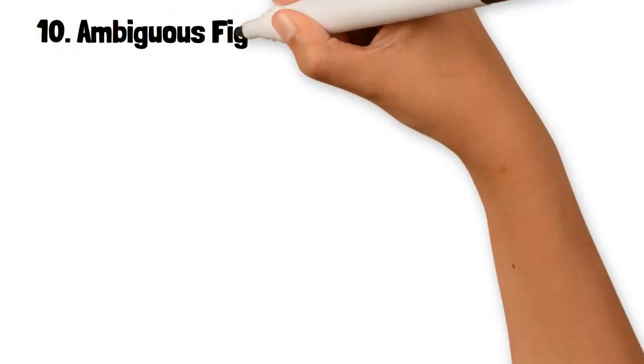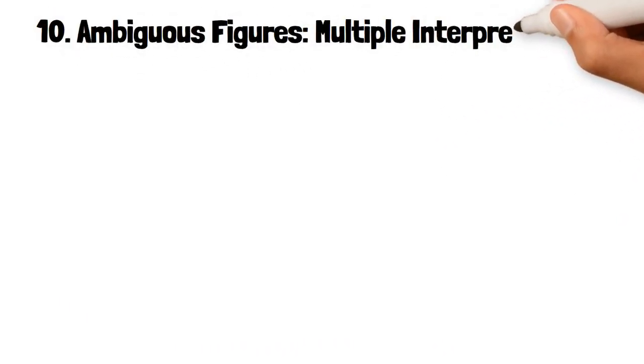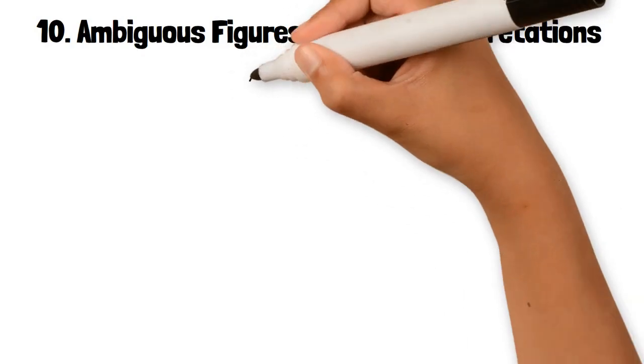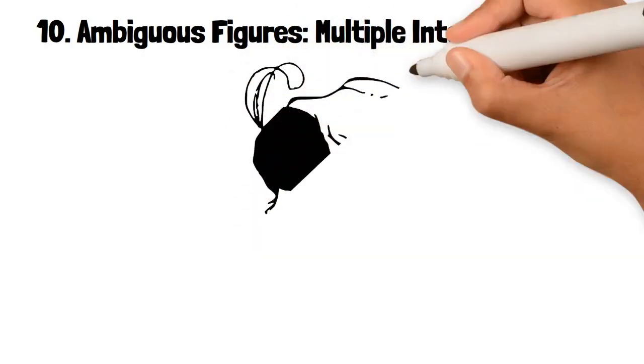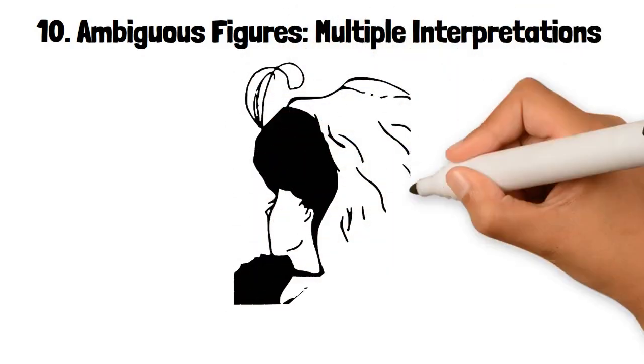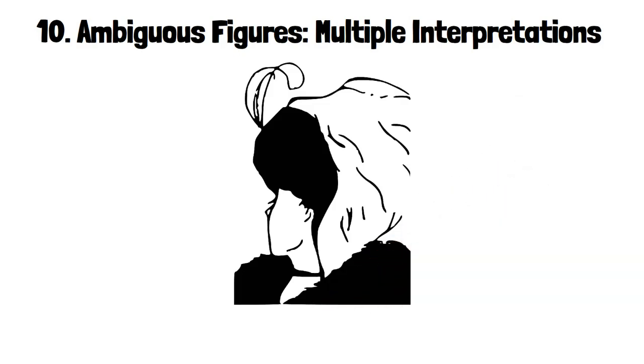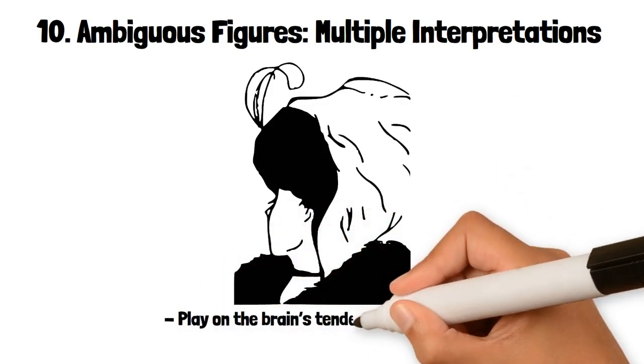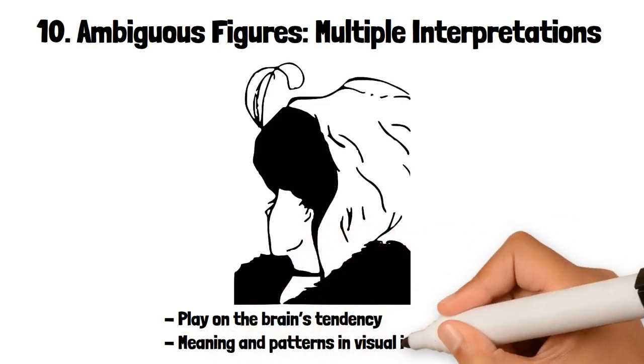10. Ambiguous Figures: Multiple Interpretations. Ambiguous figures are images that can be interpreted in more than one way, with the brain switching between different perceptions. These illusions play on the brain's tendency to find meaning and patterns in visual information.